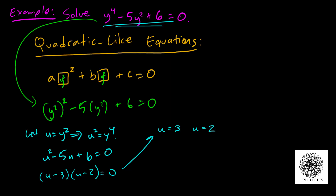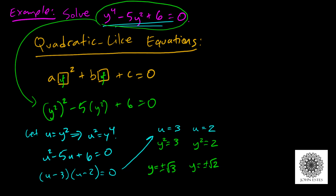But I didn't want u — I wanted y. Remember, u is the same as y-squared. So now I have y-squared equals 3 and y-squared equals 2. I went back to the y language. Now I can solve these using the square root property — take the square root of both sides. Anytime you take the square root of both sides, you have to include a plus or minus. So I have y equals plus or minus root 3, and y equals plus or minus root 2. This tells me I have four solutions to my original equation.